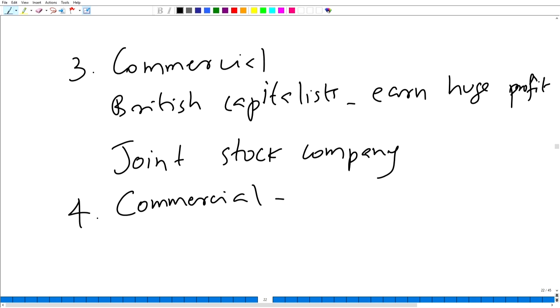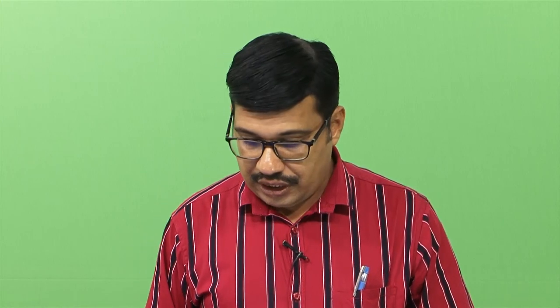The fourth reason was also commercial. Merchants in rail goods pressurized the British government to start railways in India so that their rail goods could be marketed to India. All materials for the construction of the railway were brought from Britain to India, including coal, until the 1860s. These were the reasons behind the start of the railways in India.